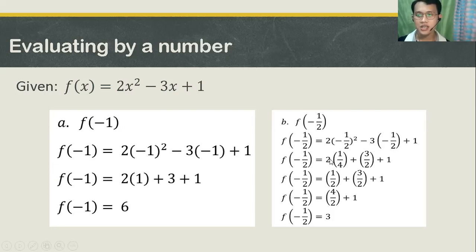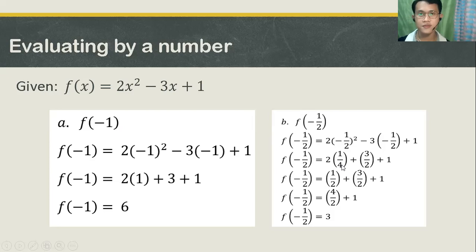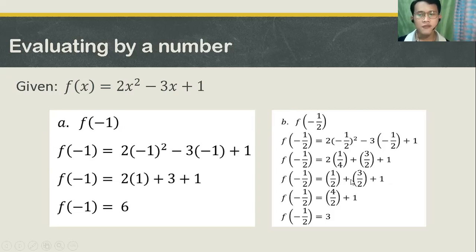Perform the operation. 2 times 1 fourth, you get 1 half. Why 1 half? Because 2 times 1 is 2, over 4. So that's 2 over 4. Simplify 2 over 4, you get 1 half. Plus 3 over 2, then plus 1. 1 half plus 3 over 2, that is 4 over 2. Why? 1 plus 3, you get 4, then 2 — copy the denominator, which is 2.